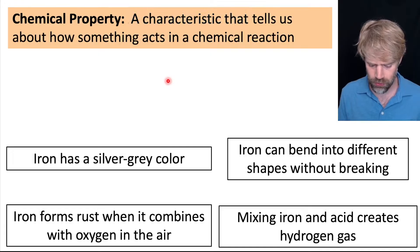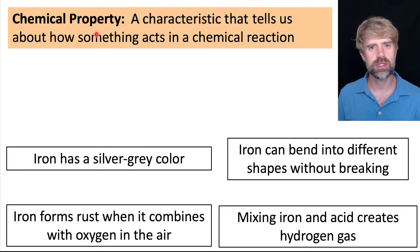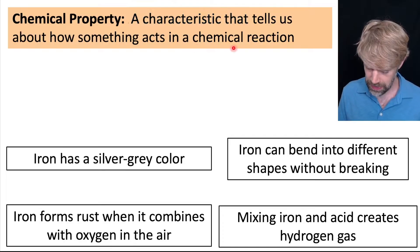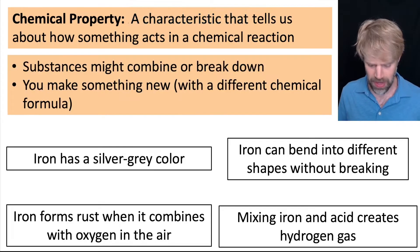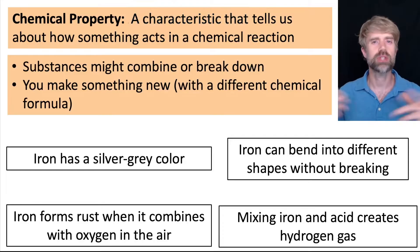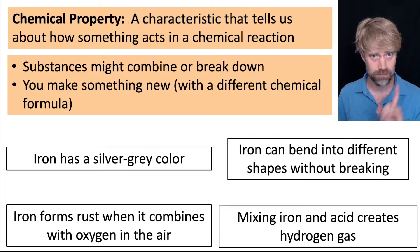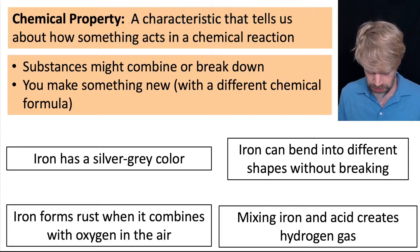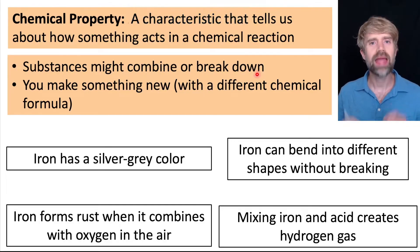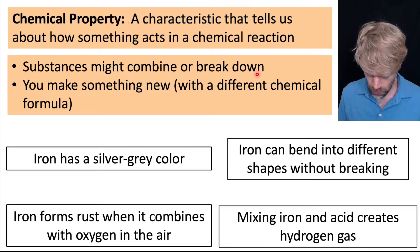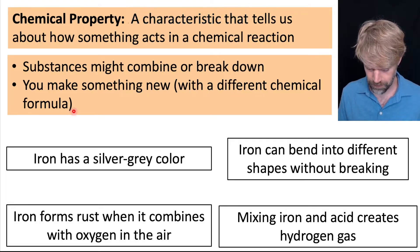A chemical property is a characteristic that tells us how something acts in a chemical reaction. How would you know that a property is talking about a chemical reaction? Well, there are some hints. During a chemical reaction, substances might combine or break down. And during a chemical reaction, you make something new with a different chemical formula.